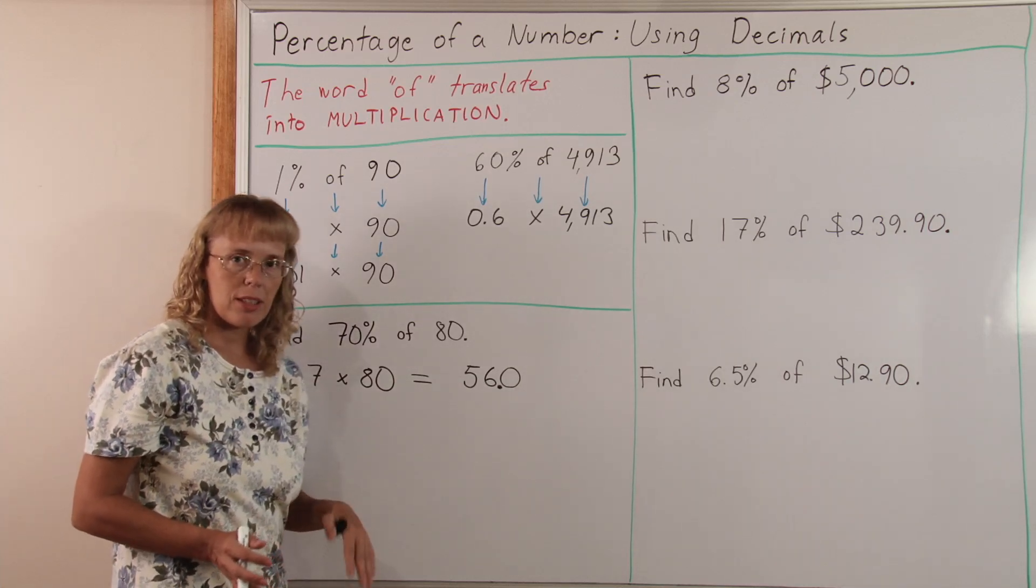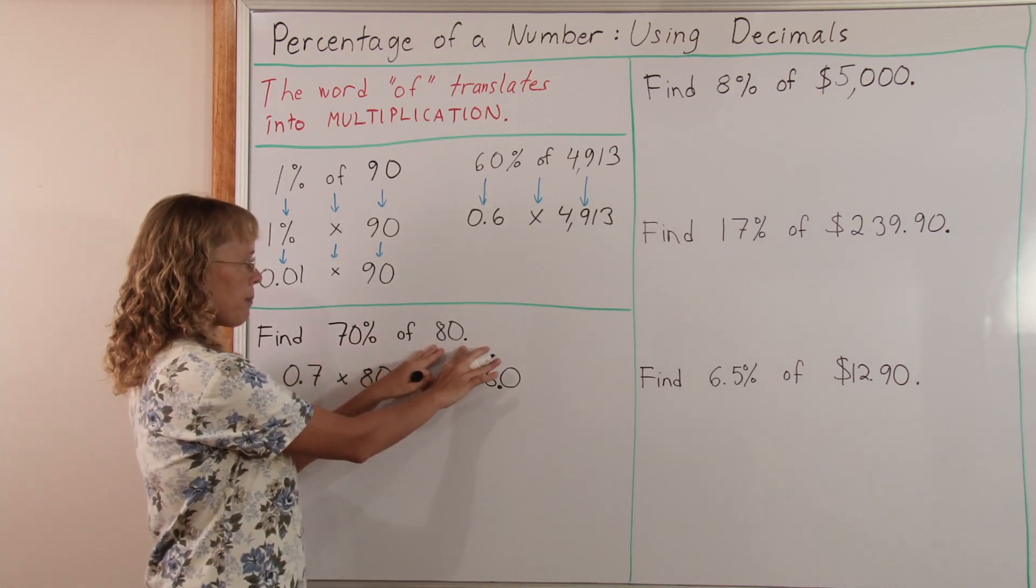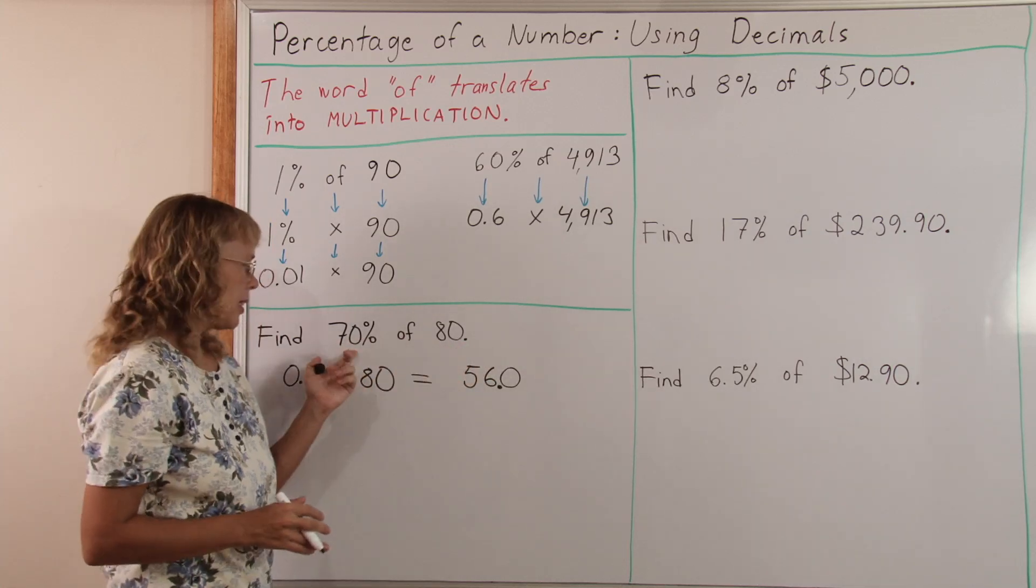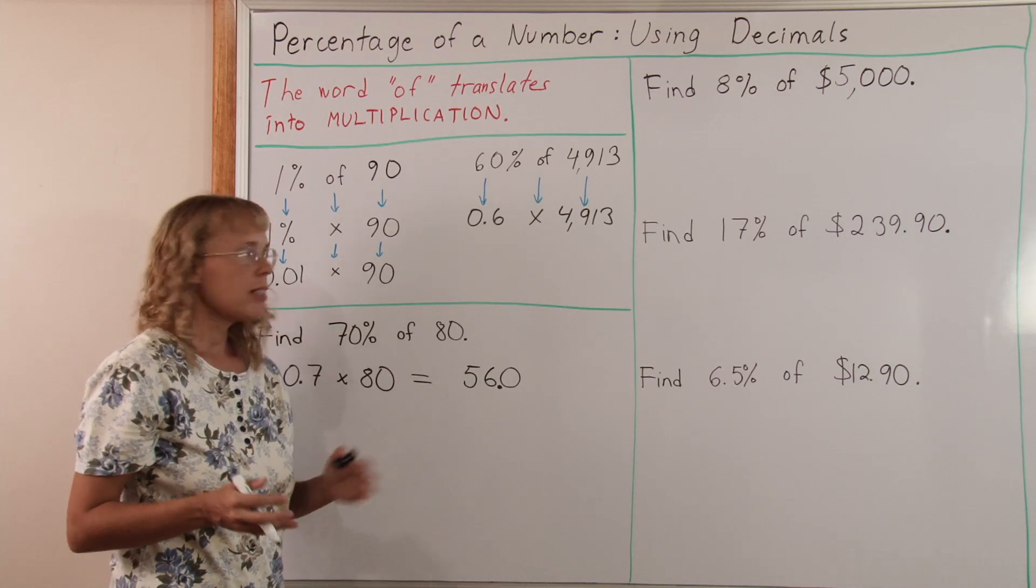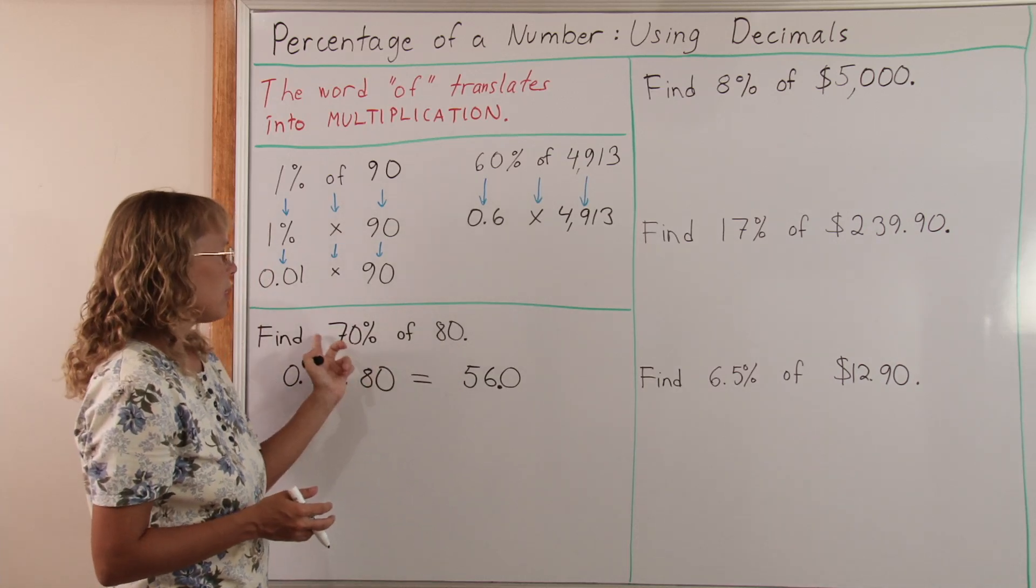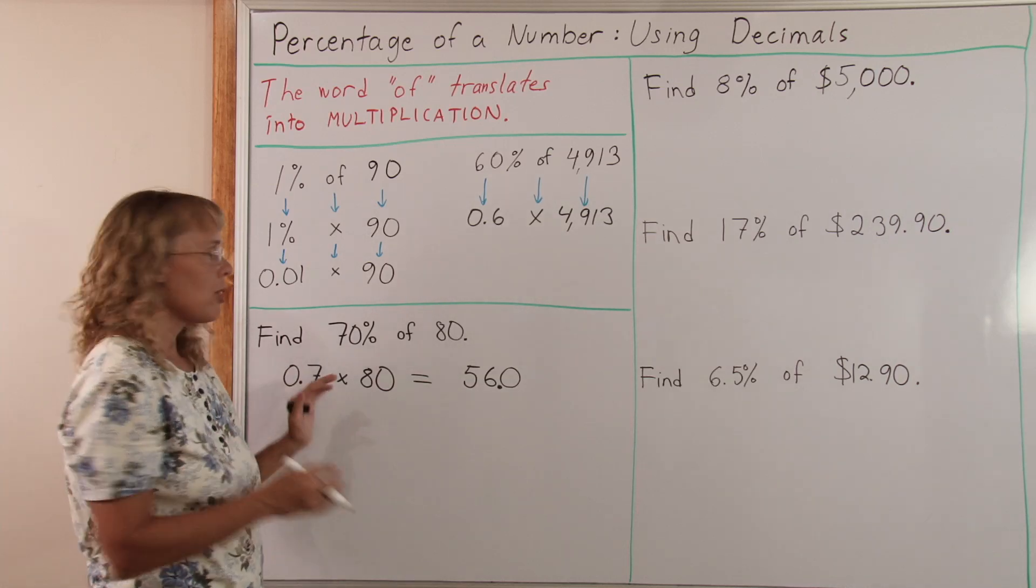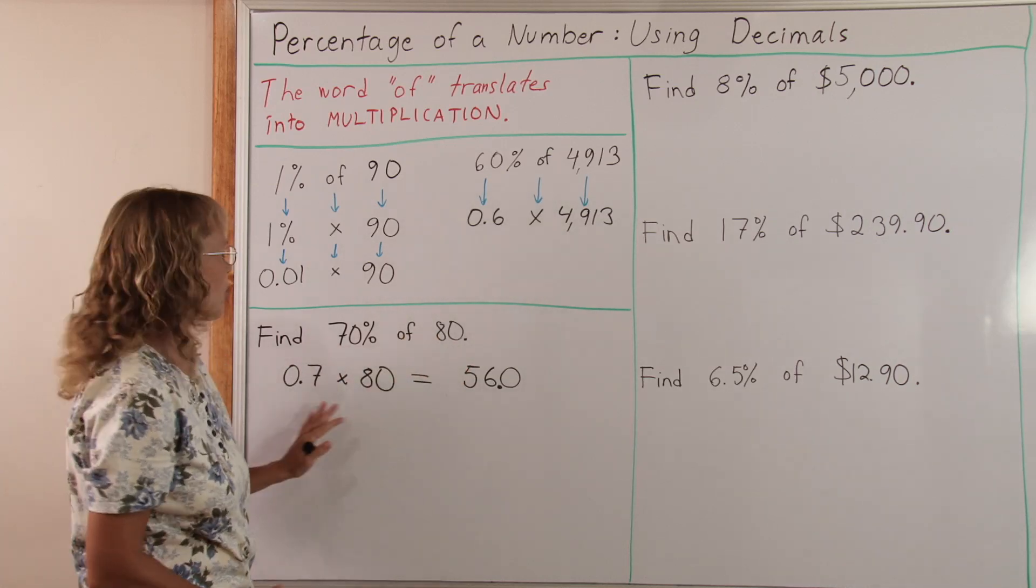You can of course use the other method that I show in the other video where you find first 10% of 80 and then multiply that by 7. And 10% of 80 would be a tenth part of this is 8. And then 8 times 7 is 56. Either way it works. You have to multiply. You have to know your 7 times 8 multiplication table thing.